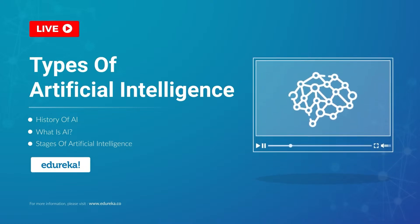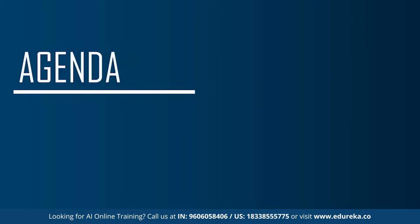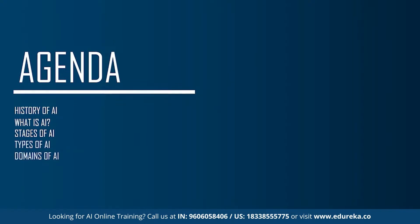Let me begin by discussing the agenda. We'll start by understanding the history of artificial intelligence, then what exactly AI is, followed by the different stages of AI, the different types of artificial intelligence, and finally the different branches or domains of artificial intelligence.